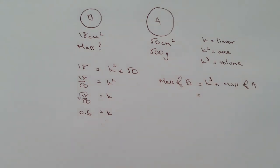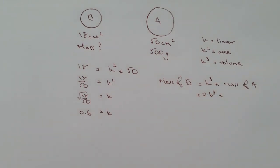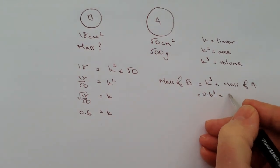Therefore we can just simply put the value of K into this calculation and work out the mass of B. So K is 0.6 and that's going to be cubed multiplied by the mass of A which is 500 grams.